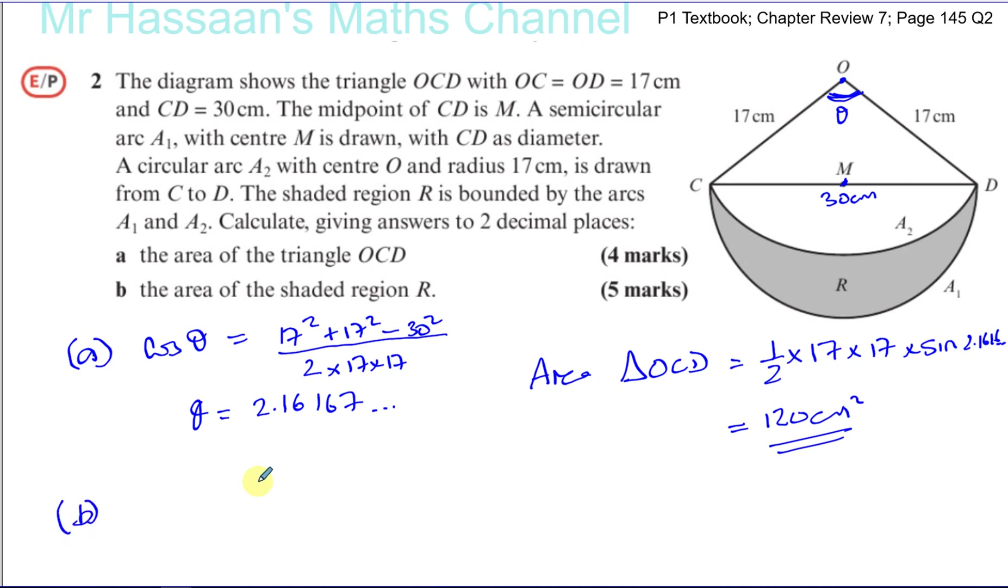Part B, find the area of the shaded region R. Now, if we think about it, the shaded region R is a semicircle, which has got the center M. This semicircle, which is center M, means that radius is 15 centimeters. That semicircle minus this segment. If we take away this segment from this semicircle, we end up with a shaded region.